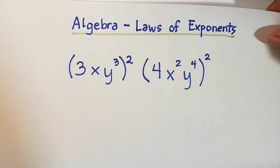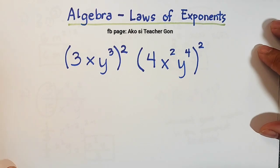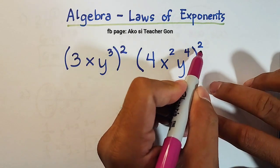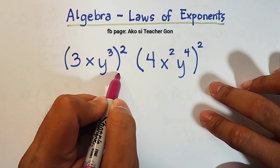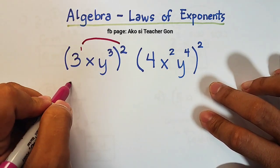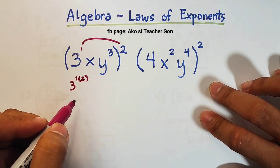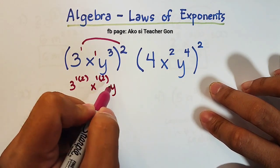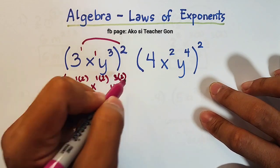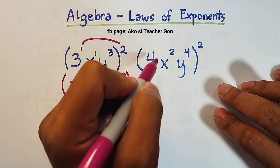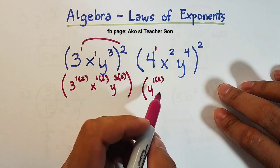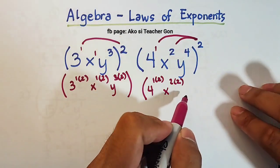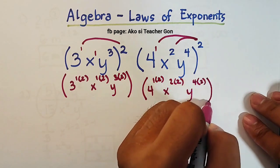Now let's continue with the main problem: 3xy raised to 3 squared times 4x squared y raised to 4 squared. Using the power rule, we can individually simplify each expression. For the first part: 3 raised to 1 times 2, x raised to 1 times 2, and y raised to 3 times 2. For the second part: 4 raised to 1 times 2, x raised to 2 times 2, and y raised to 4 times 2.